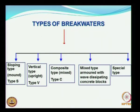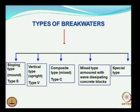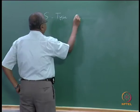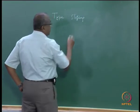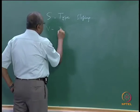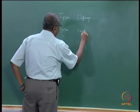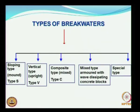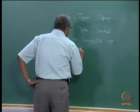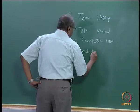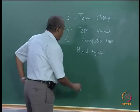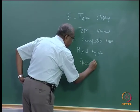Types of breakwaters: we have the S type (sloping type), V type (vertical breakwaters), C type (composite breakwaters), mixed type combinations, and finally special types of breakwaters.